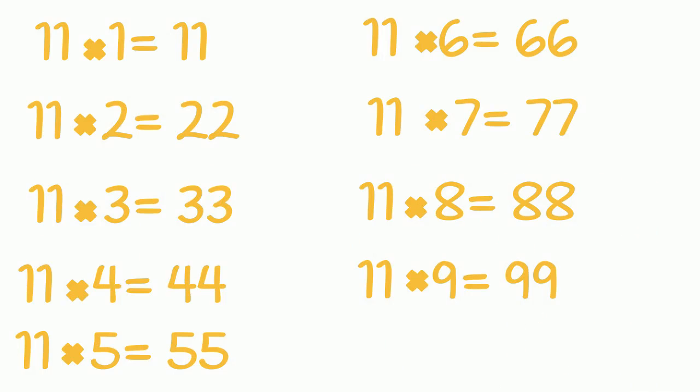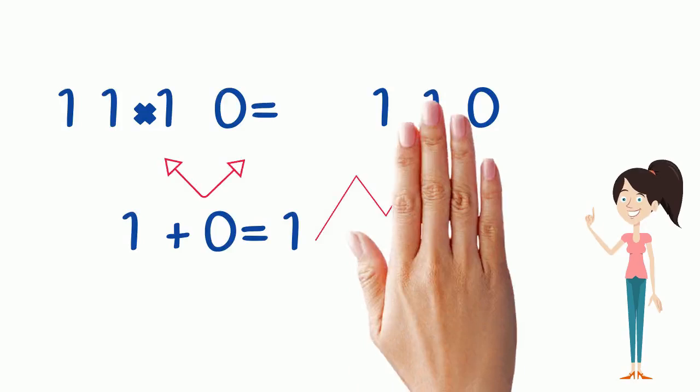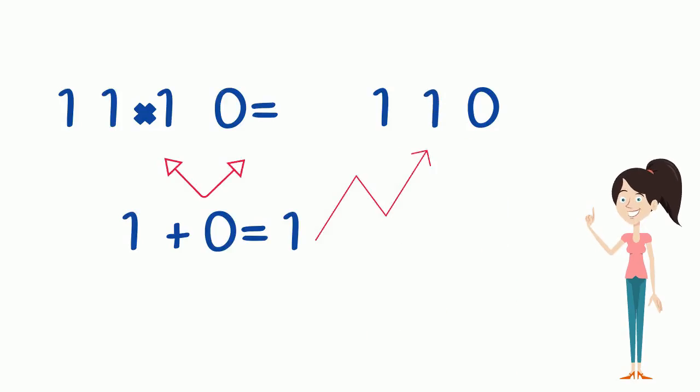This is a very simple rule. When you are multiplying 11 by a two-digit number, you write the number that you're multiplying by and leave a gap in between the two digits. Then add those two digits and write the answer in the middle of the other two numbers.